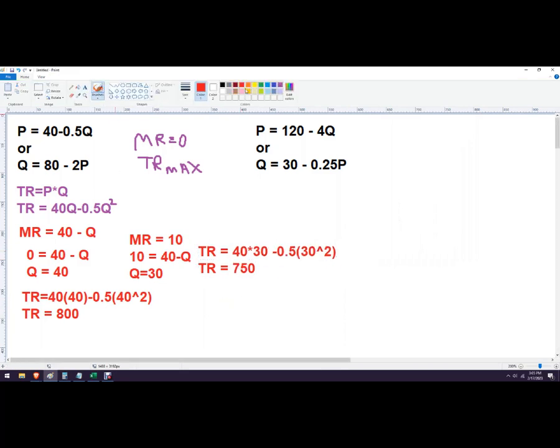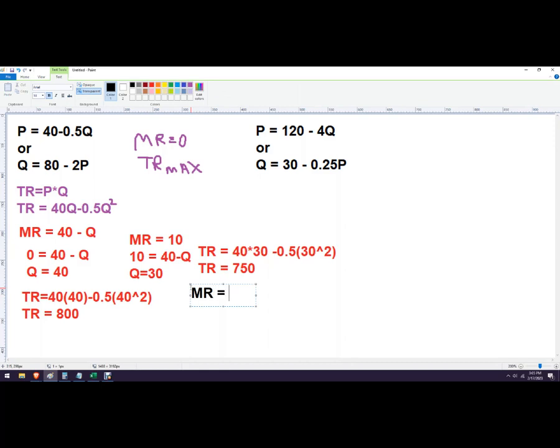Let's do a negative marginal revenue. Let's plug it back into the same numbers here. Let's say, let's just say it was negative 1. So really close to 0, but a negative number. So negative 1. And we're going to plug that into here. Negative 1 equals 40 minus Q. So that would be Q equals 41.